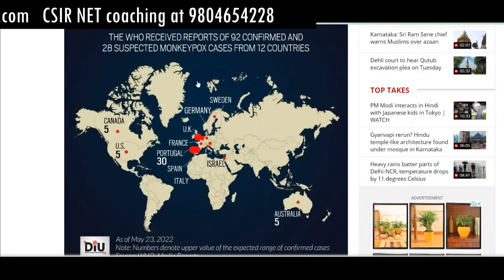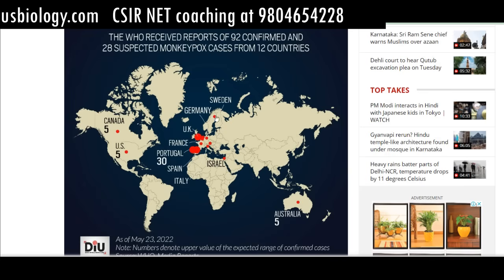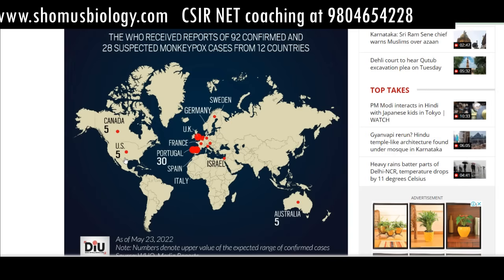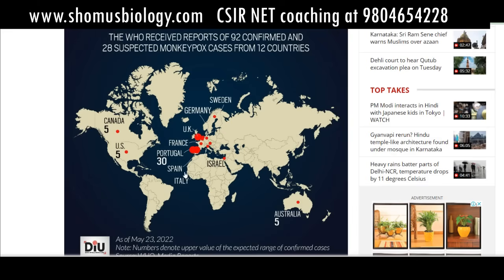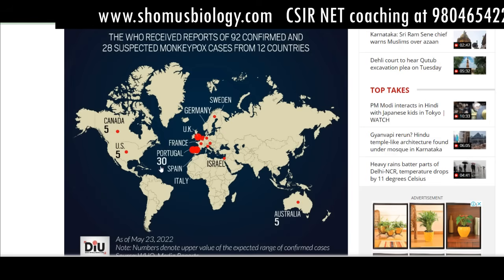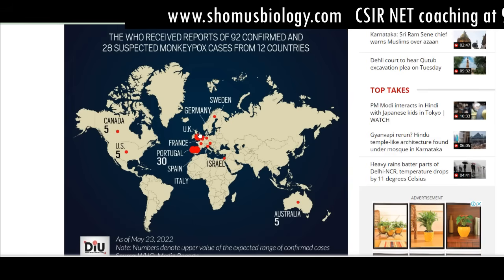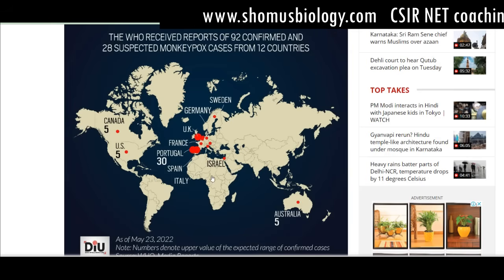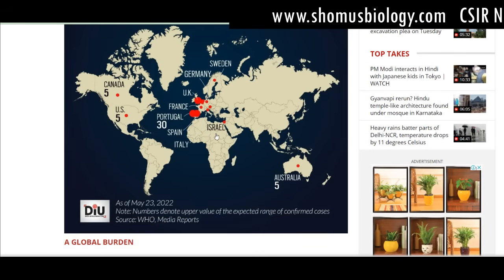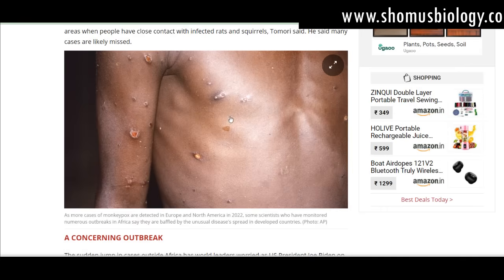The WHO received reports of 92 confirmed and 28 suspected monkeypox cases from 12 different countries as of 26th May 2022. The breakdown: Canada 5, US 5 — total 10 in the Americas; Germany, UK, France, Portugal, Spain, Italy, Israel, Sweden — totaling around 30 in Europe; and Australia 5. All these cases originated from Central Africa and West Africa. As of May 23rd 2022, this number may grow in the upcoming weeks. The image shown here illustrates the condition of monkeypox — blisters throughout the body.